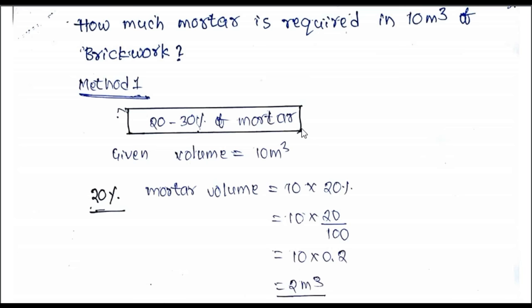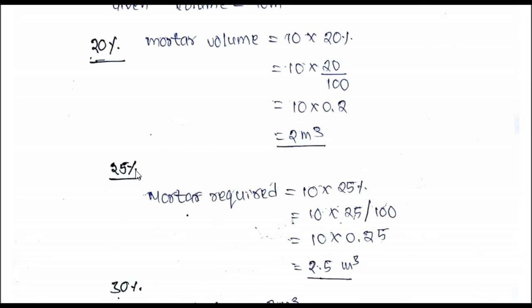Let's have a look at the solution of this problem so that it will be very clear to you. In the first case I have taken it as 20 percent. Mortar volume equals 10 into 20 percent, which is 20 by 100, which equals 0.2. 10 multiplied by 0.2 equals 2 cubic meters.